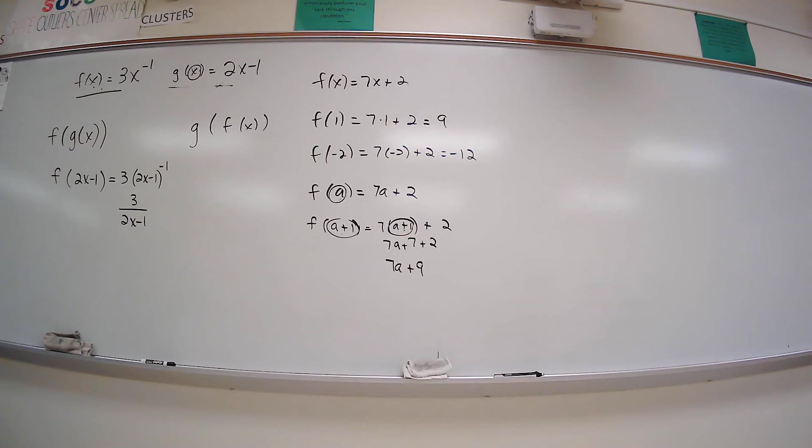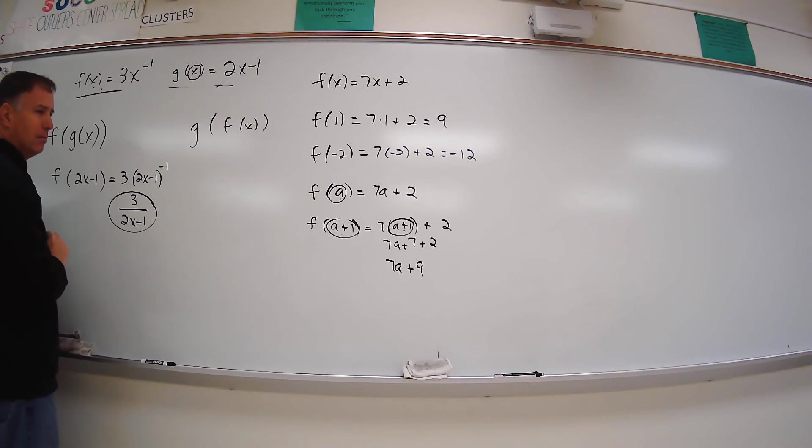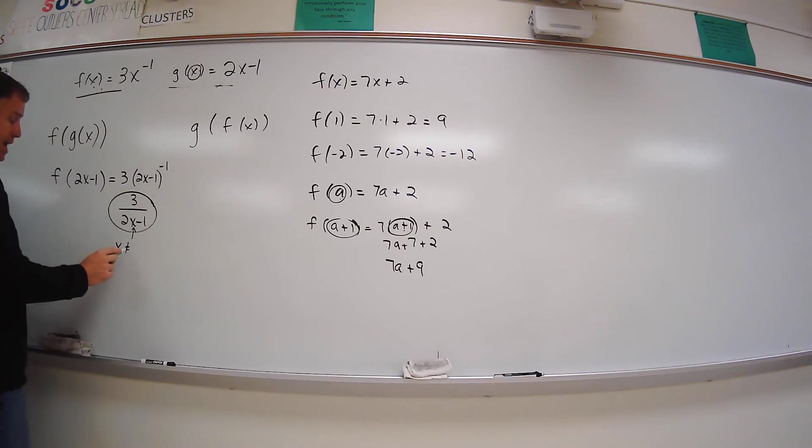What do we see here? What do we see that's going to be a problem? We see this x on the bottom. So your x is on the bottom. So we know that x cannot be a half. Because if x was a half, 2 times a half is 1, and 1 minus 1 is 0. So we can't have that.